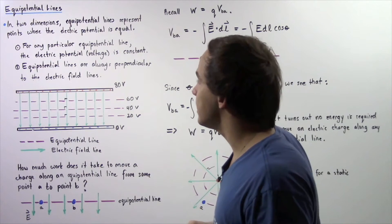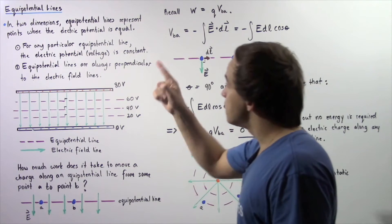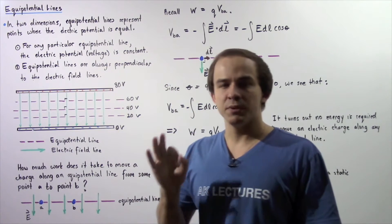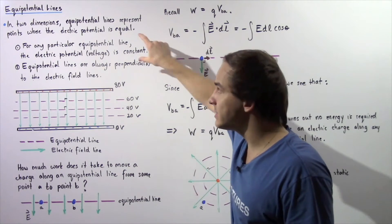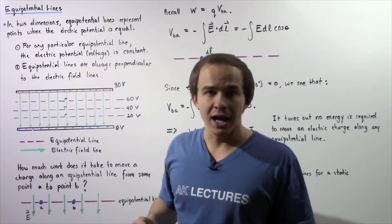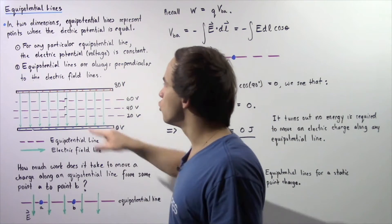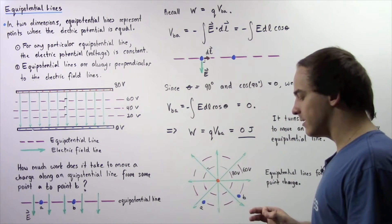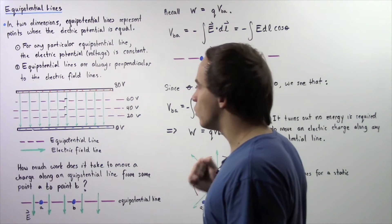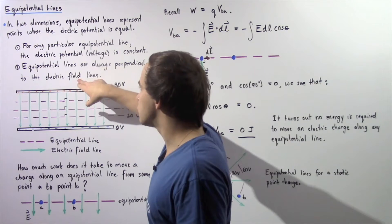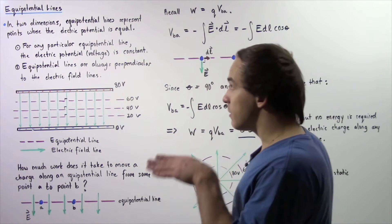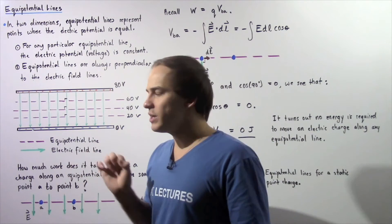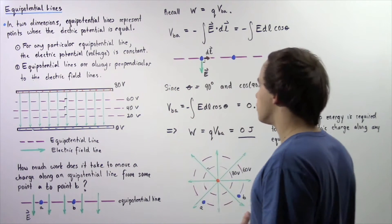Fact number one about Equipotential Lines: for any particular Equipotential Line, the electric potential, the voltage, remains constant along that particular line. And fact number two: Equipotential Lines are always perpendicular at a 90 degree angle with respect to the electric field lines. So the Equipotential Lines and electric field always point at a 90 degree angle with respect to one another.